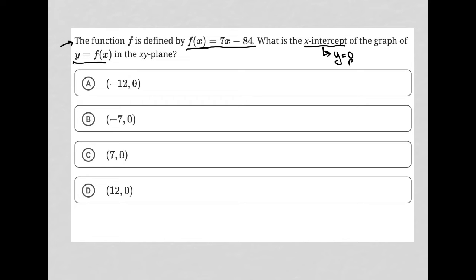so we could also state this as f(x) is equal to 0. I'm going to replace f(x) with 0, so I have 0 = 7x - 84.